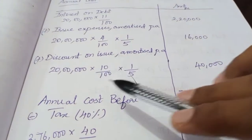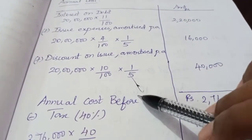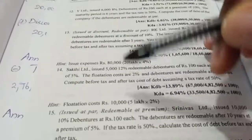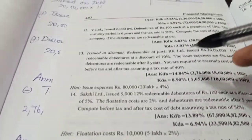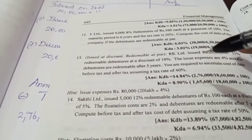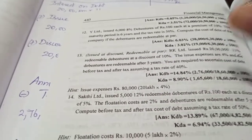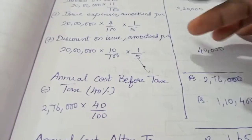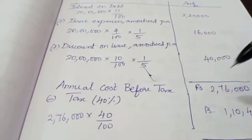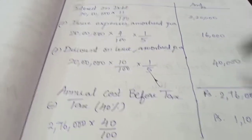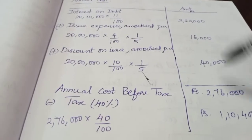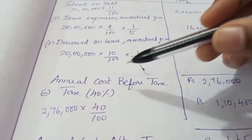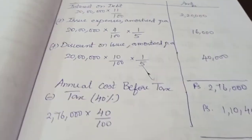If there were a premium on issue, we would minus it. In this case, there is only a discount, so we add it. Therefore, 2,76,000 is the annual cost before tax.